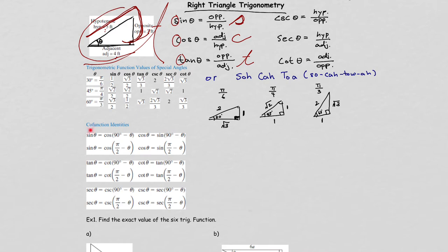We also have cofunction identities. Sine theta equals cosine of 90 degrees minus theta. Cosine theta equals sine of 90 degrees minus theta. Tangent is related to cotangent, and secant is related to cosecant in the same way.